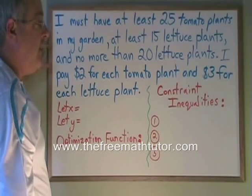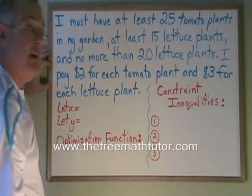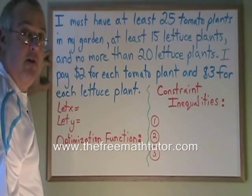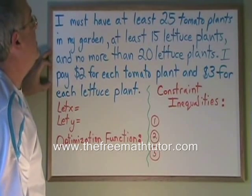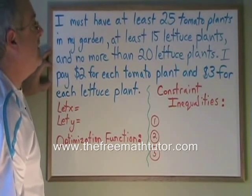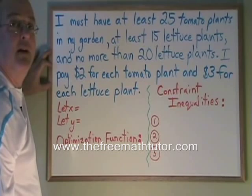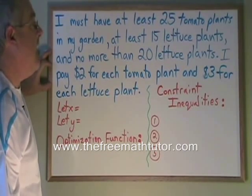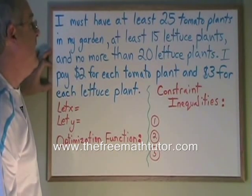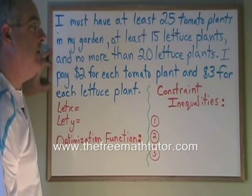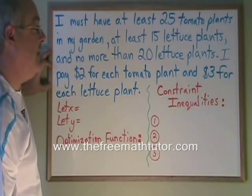Before you can make either type of equation, you have to define your x and your y variables. In this case, I have at least 25 tomato plants in my garden, at least 15 lettuce plants, and no more than 20 lettuce plants. I pay $2 for each tomato plant and $3 for each lettuce plant.